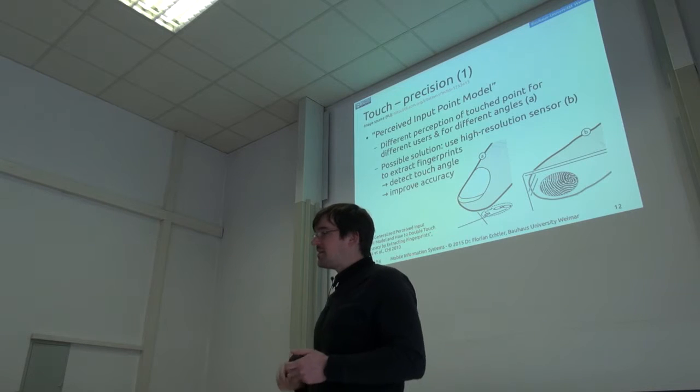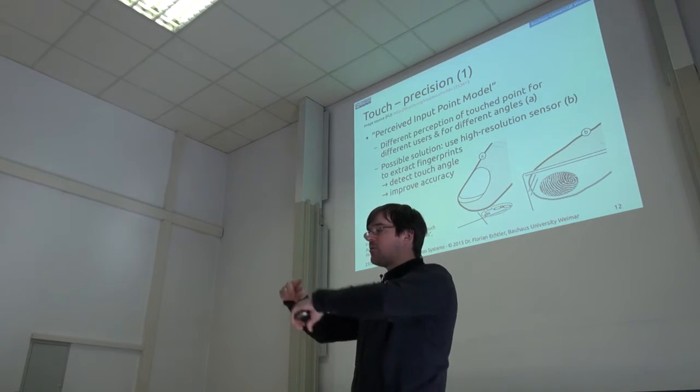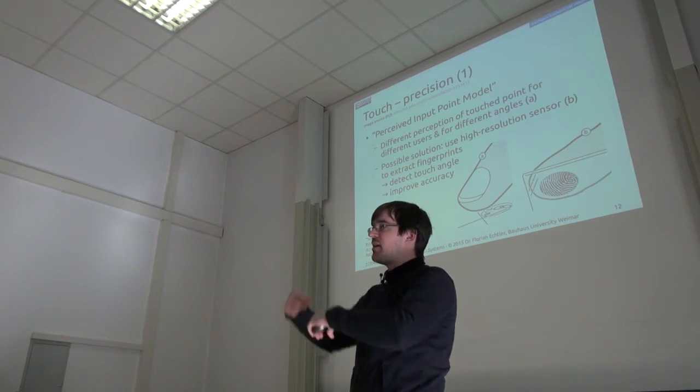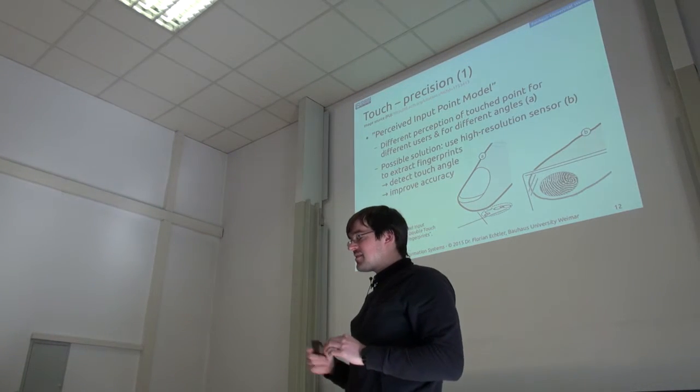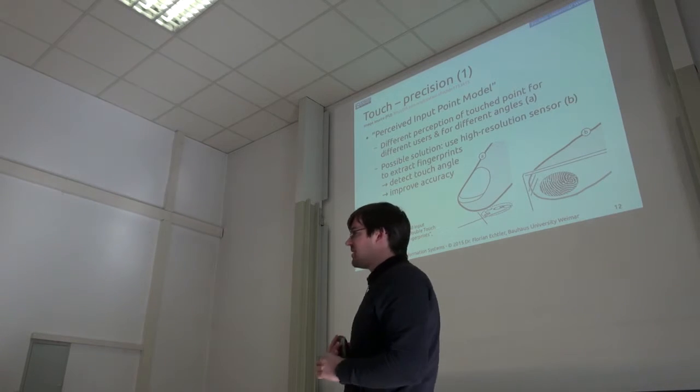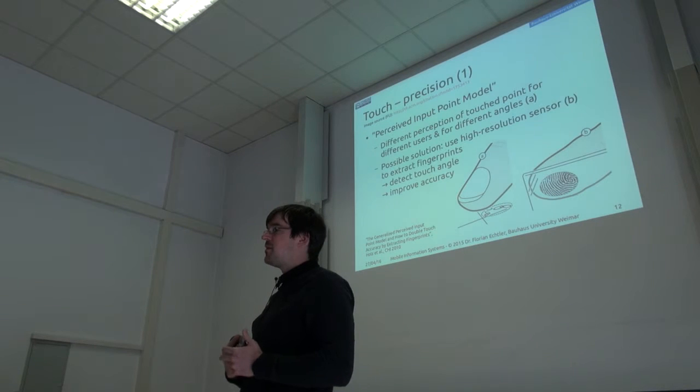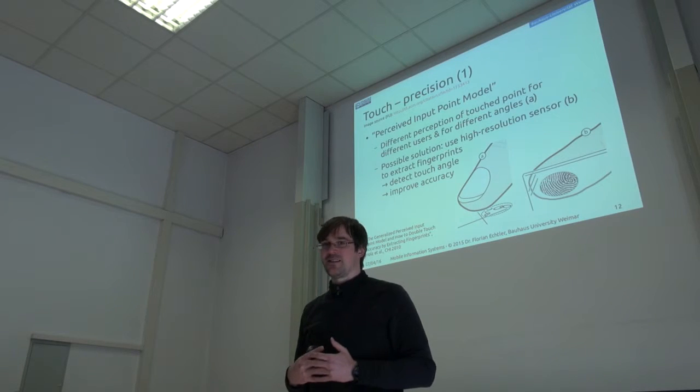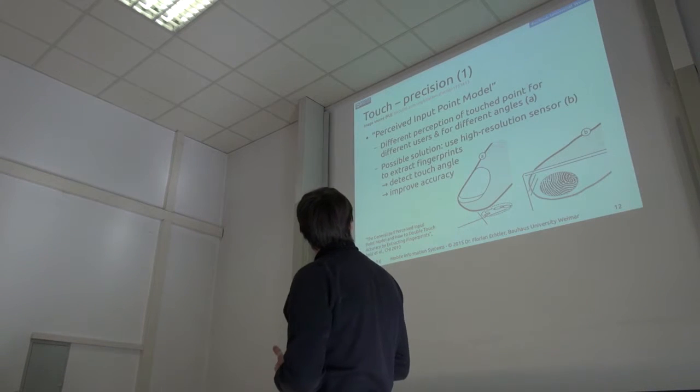So if you want to do very precise work on the touch screen, then you might actually have to adapt it to the user. And it also depends on how you hold your finger. If it's very flat, then you get a different result compared to if it's at a very steep angle. There's lots of factors influencing this. You can build high precision touch screens, but it's very user-specific. You would have to train it for one specific user to really get a high precision screen in this example.